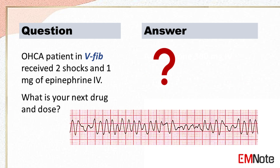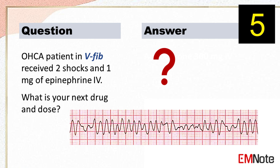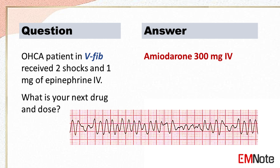An OCA patient in V-fib has received 2 shocks and 1 mg of epinephrine intravenously. What is your next drug and dose? The next drug and dose should be amiodarone 300 mg intravenously.